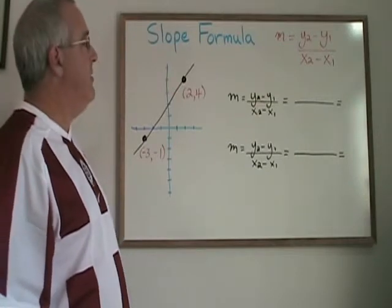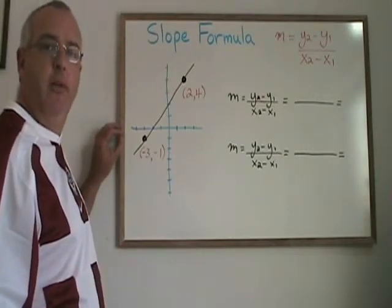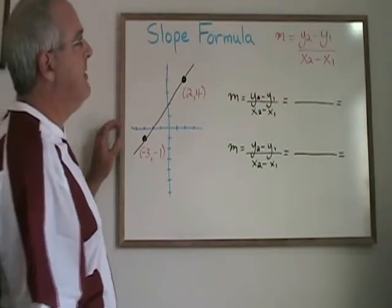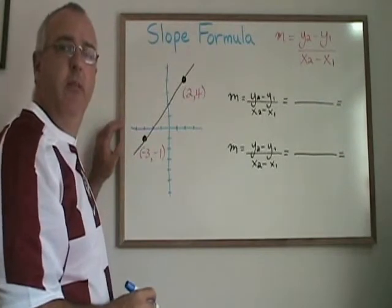The slope formula is used to find the slope of any straight line where we know two points. And it looks like this: m equals y2 minus y1 over x2 minus x1.